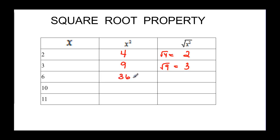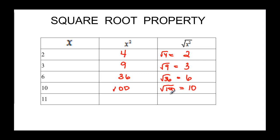6 squared is 36, and it's really saying the square root of 36 — 6 times itself is 36 — so we get back to 6. And 10 squared would be 100, so the square undoes the square root and we're just back to 10. Then 11 squared would be 121, and the square root of 121 is going to be 11.